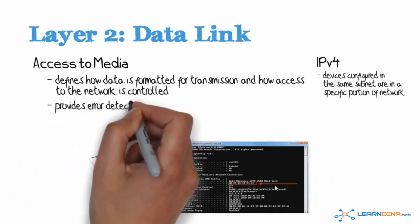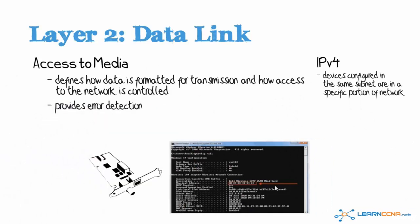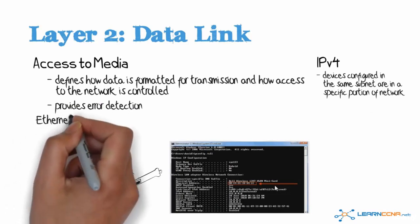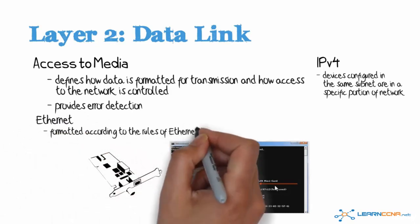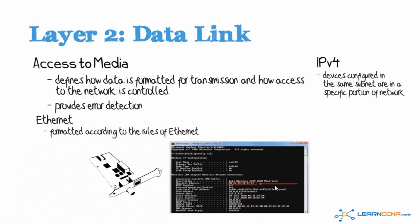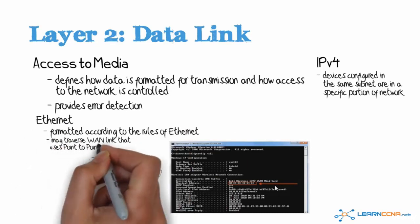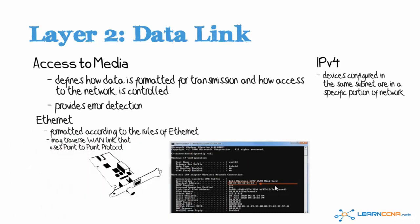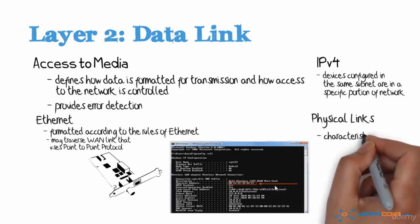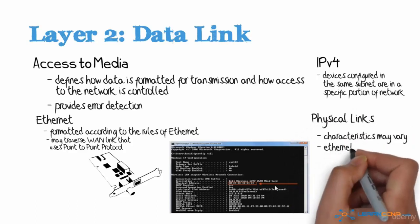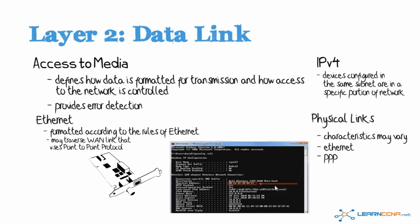This layer also provides error detection, and in certain cases can correct errors that occur at the physical layer. When using Ethernet as an example, the data sent onto the network has to be formatted according to the rules of Ethernet. However, that data may traverse many links, and at another point in the network it may traverse a WAN link using point-to-point protocol, or PPP. The data link layer ensures that data from higher layers is formatted correctly for transmission across individual physical links, where the physical link characteristics may vary. One link may be Ethernet, another may use PPP across a serial cable, and another may be using DSL.